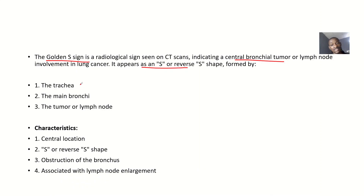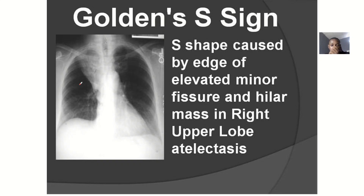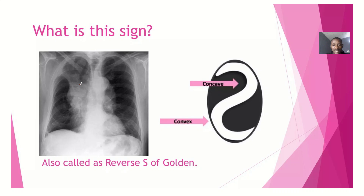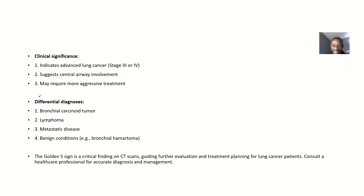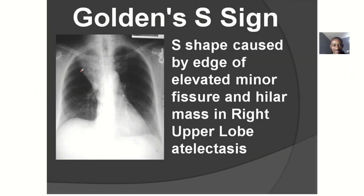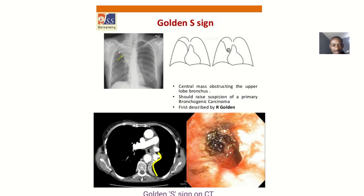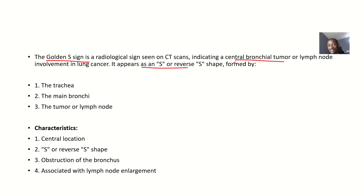The components of the Golden S sign include the trachea and main bronchi. If a tumor is present or if there is lymph node involvement, it will show up on the scan. The sign appears reversed, and it involves these central airway structures.